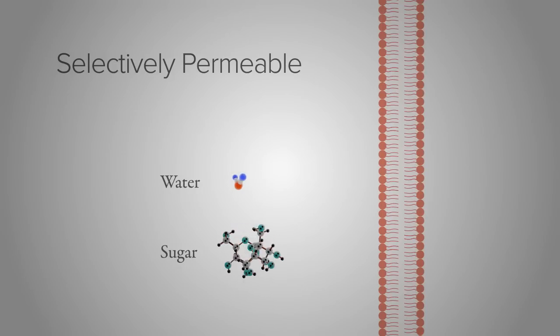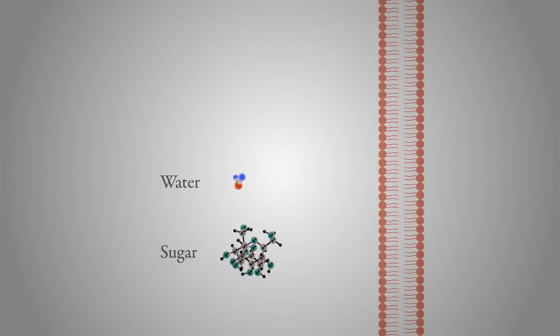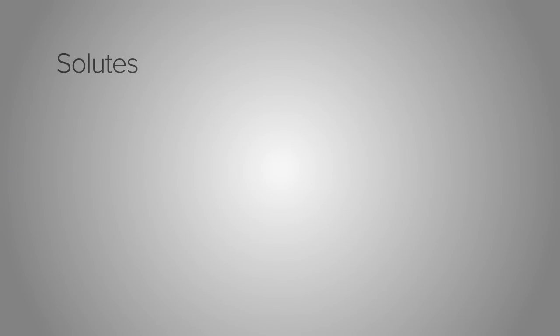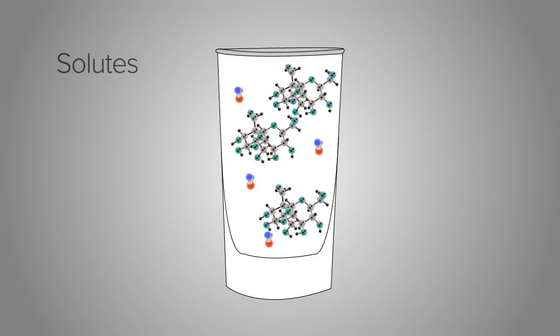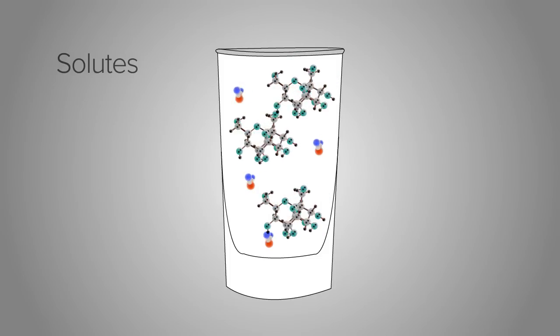The reason that water travels across a selectively permeable membrane is based on molecules called solutes. What is a solute? A solute is a substance that is dissolved in another substance. For example, when sugar is dissolved in water, it is known as a solute.